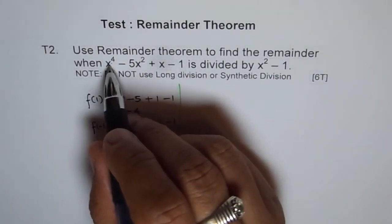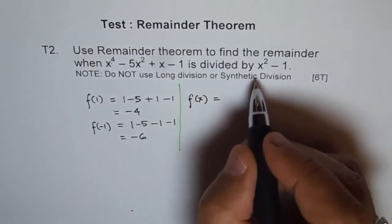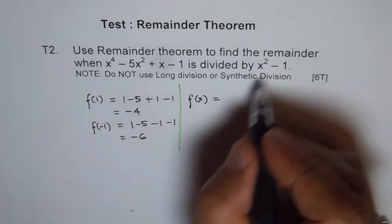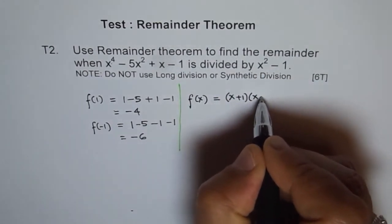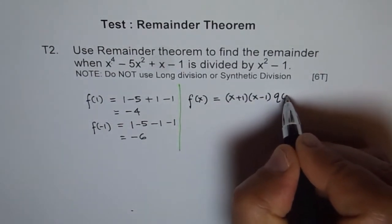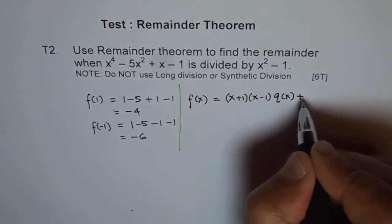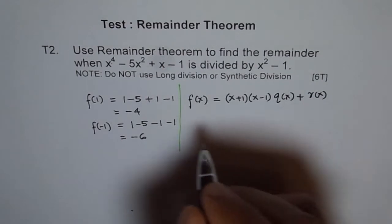We can write f of x as x squared minus 1. I will factor it as x plus 1 times x minus 1. We don't know what the quotient is, so let's write quotient as q of x plus remainder, also we don't know. So let's write remainder as r of x.